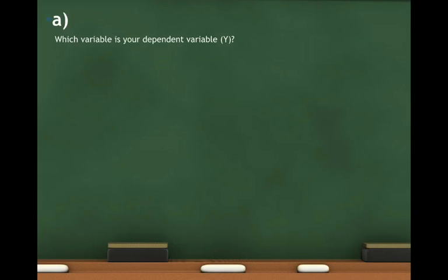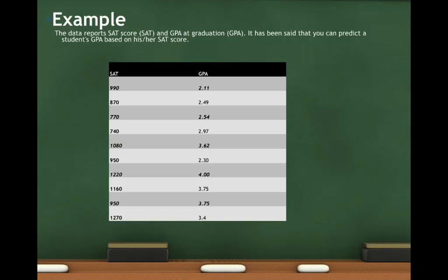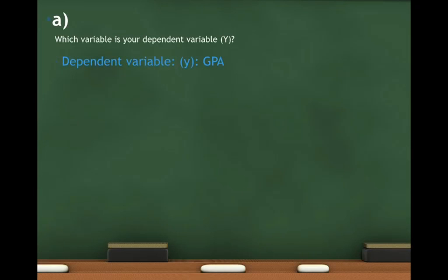What you want to do first is determine what is your dependent variable — what is Y — and what is your independent variable — what is X. We said we could predict GPA based on SAT. So your dependent variable Y is GPA, and your independent variable X is SAT. It's very important that you know what is X and Y first.